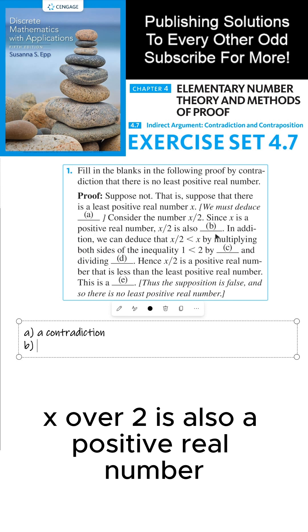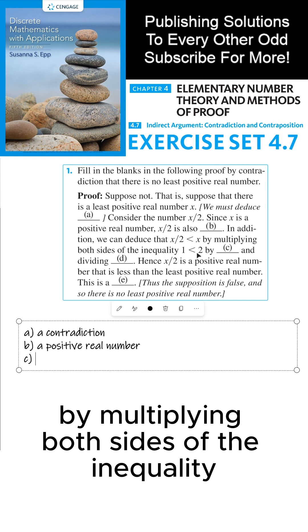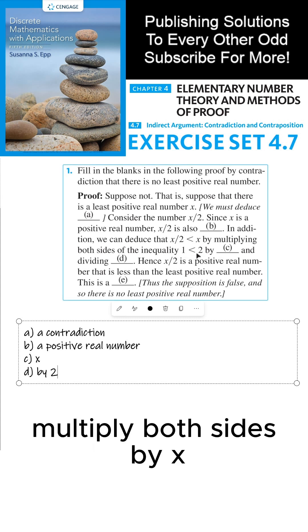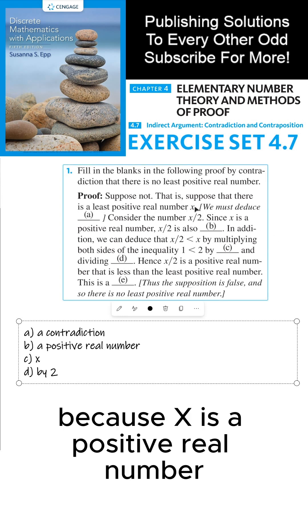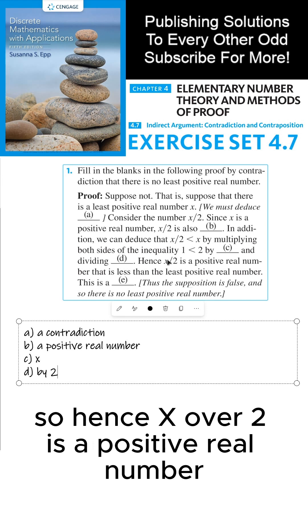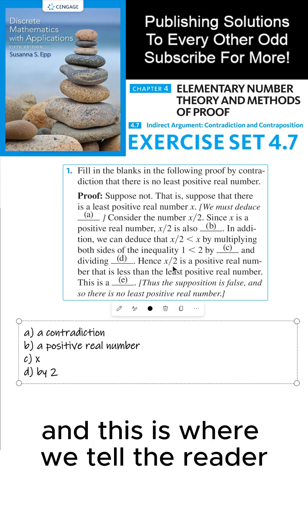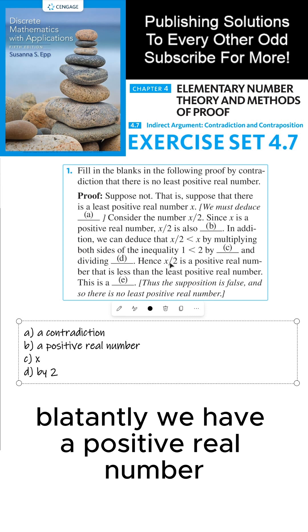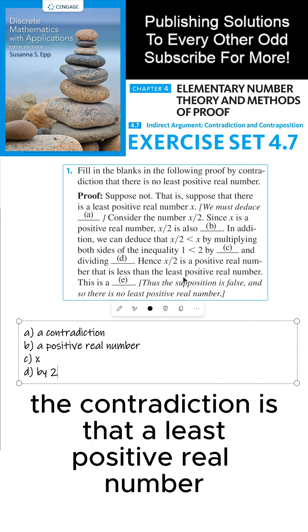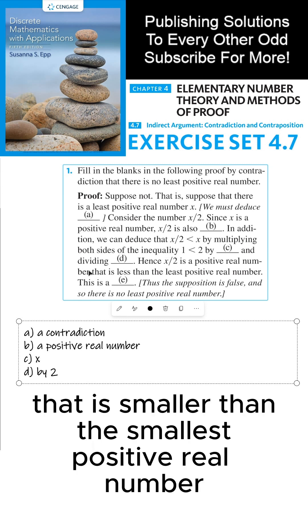Since X is a positive real number, X over 2 is also a positive real number. In addition, we can deduce that X over 2 is less than X by taking the inequality 1 is less than 2, multiplying both sides by X — which we can do because X is positive, so we don't have to flip the inequality symbol — and then dividing both sides by 2 to get X over 2 is less than X. Hence, X over 2 is a positive real number that is less than the least positive real number.